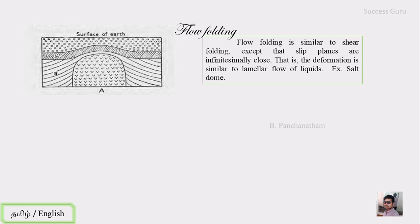A good example of flow folding is a salt dome diapir. In a basin, the bottommost layer is a salt deposit overlain by whole rock. Salt density is less than rock density, so the low-density salt rises through the high-density rock above it. This density difference drives flow folding. So: Flexural Folding is caused by layer parallel compression; Shear Folding is caused by layer perpendicular forces; Flow Folding is caused by density difference.